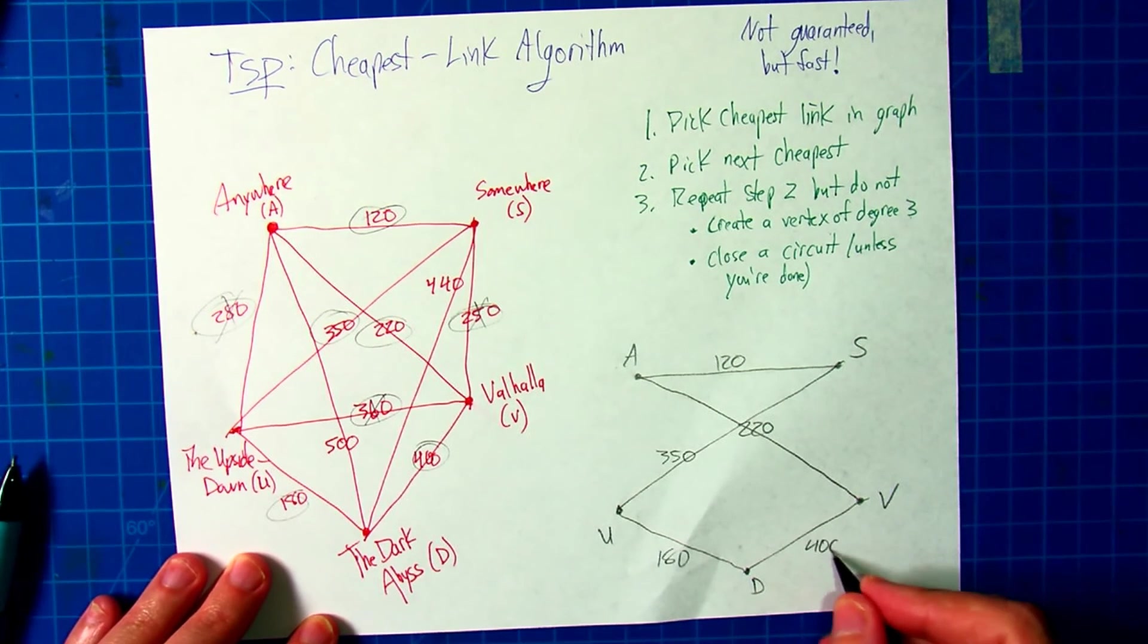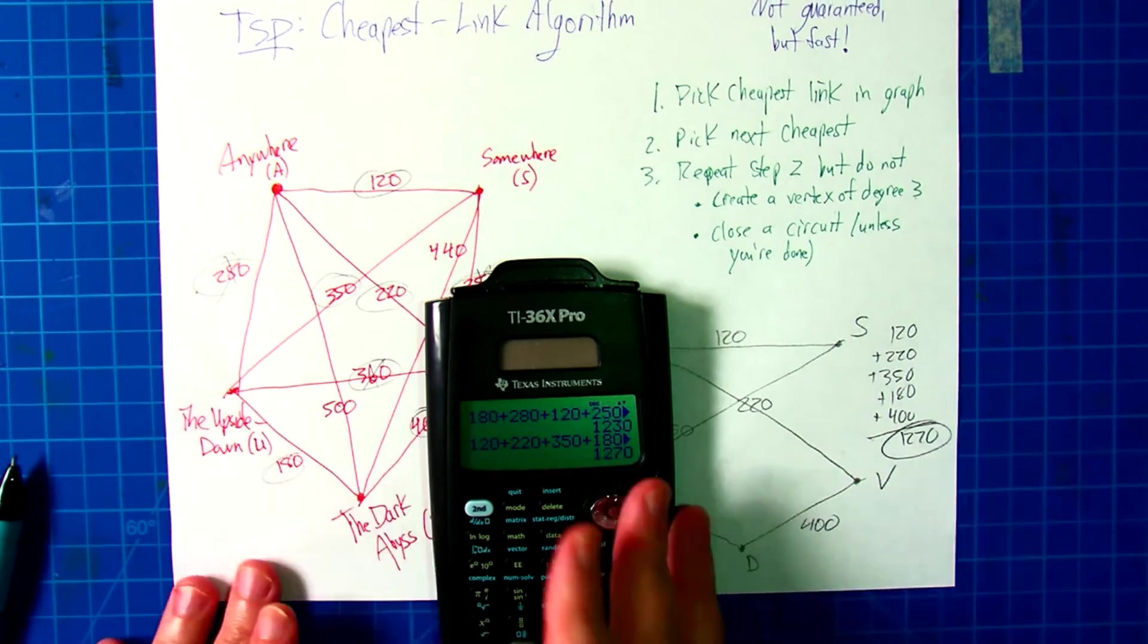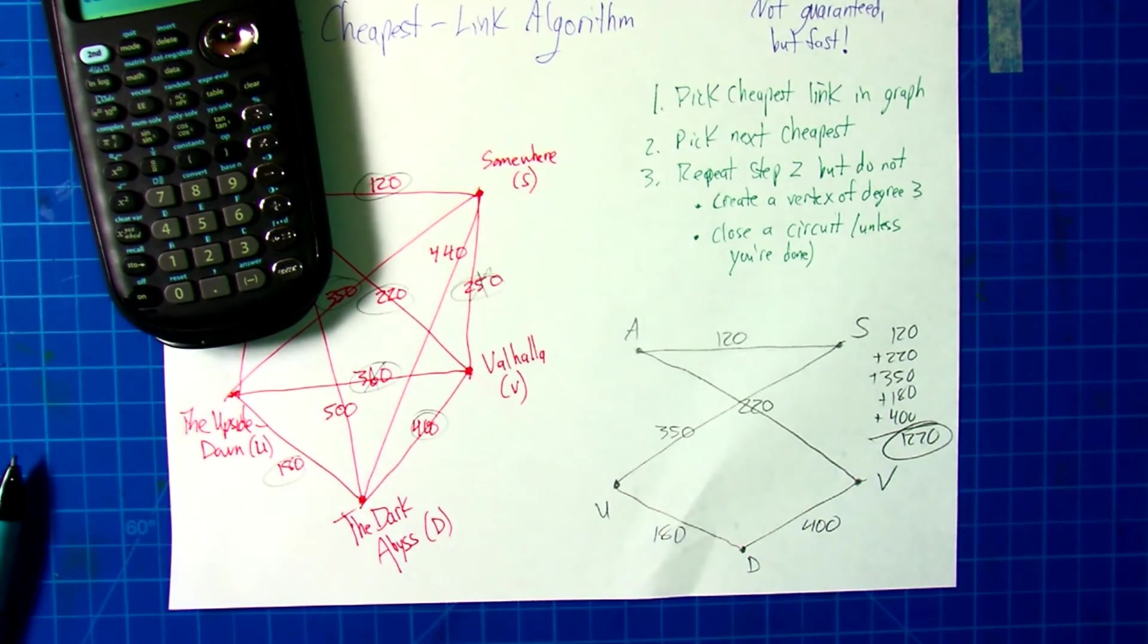So if you put this in, you get a total of 400. So the total here is going to be 120 plus 220 plus 350, and we get a total of 1,270.